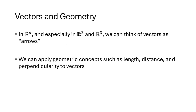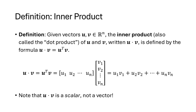In Rn, and especially in R2 and R3, we can think of vectors as arrows — we first discussed this back in Lecture 6. We can apply geometric concepts such as length, distance, and perpendicularity to vectors. We define the inner product of two vectors in Rn, also called the dot product, written u dot v, and that's defined by the formula u dot v equals u transpose times v.